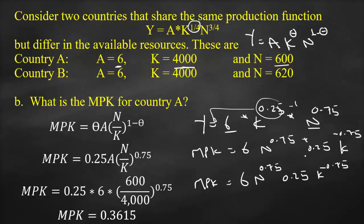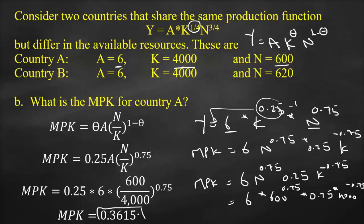Now substituting N = 600 and K = 4,000: MPK = 6 × 600^0.75 × 0.25 × 4000^(-0.75). Using a calculator, you get the same MPK result. So you have two ways: either use the first derivative or substitute directly into the formula.